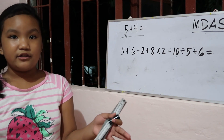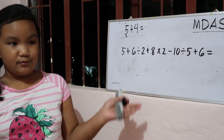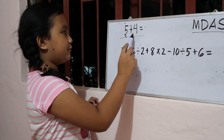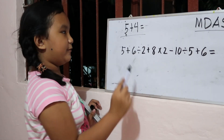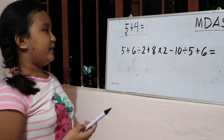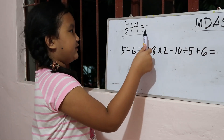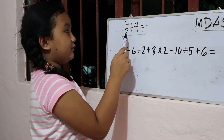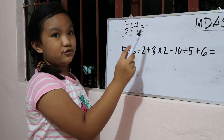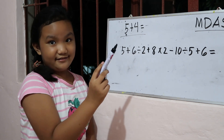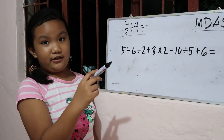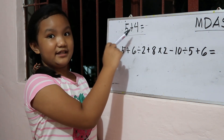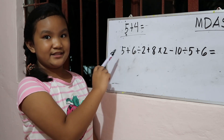Usually in one number, there's only two operands and one operation. These are called operands. Usually they are, for children's sake — for like grade one and grade two — there's only like these little bits.